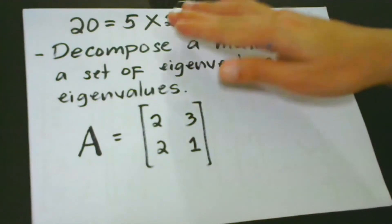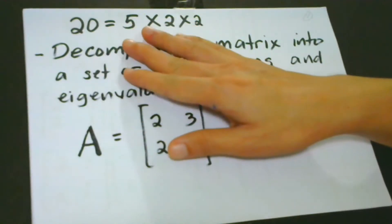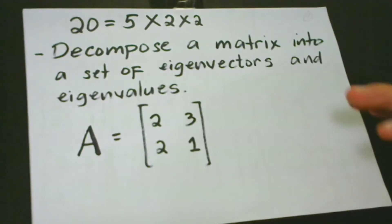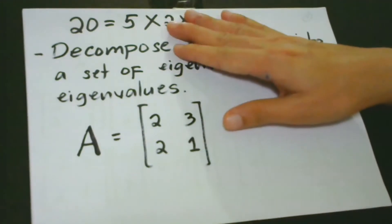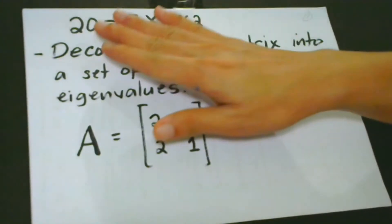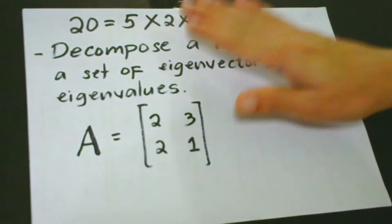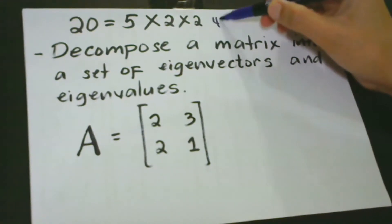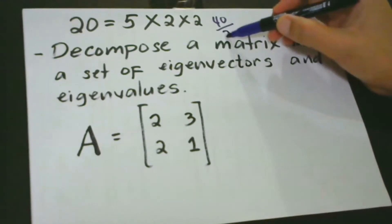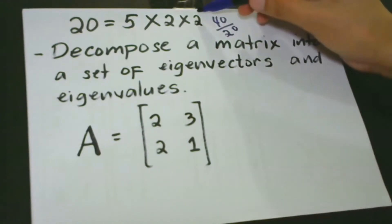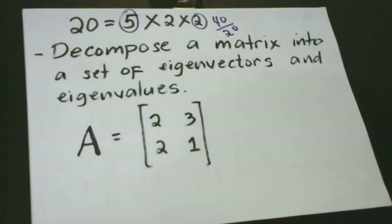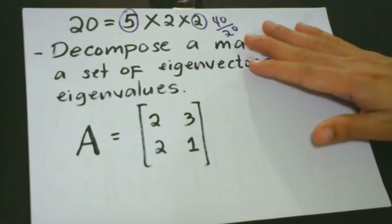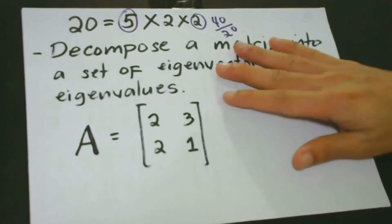The prime factors of number 20 are 5, 2, and 2. When we multiply 5 by 2, that is 10, then by 2 again, that becomes 20. With this, we can say that 20 is not divisible by 3, and that any integer multiple of 20 is also divisible by 2 and by 5. For example, 40 is divisible by 20, and because it's divisible by 20, it can also be divisible by 2 and 5. This is how we decompose an integer using prime factors. In the same way, we can also decompose matrices to understand their functional properties.